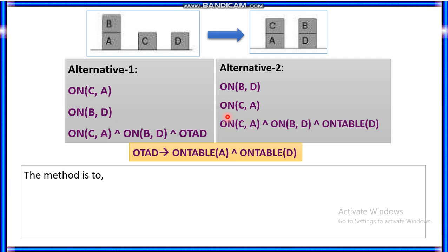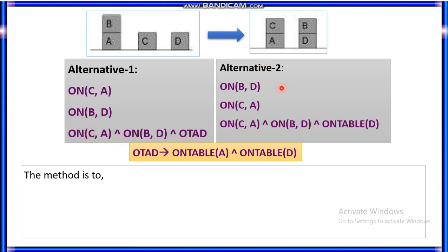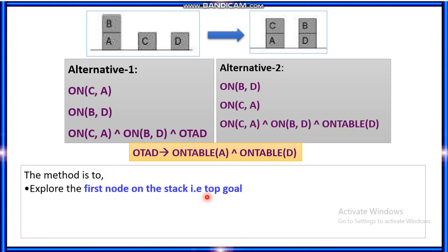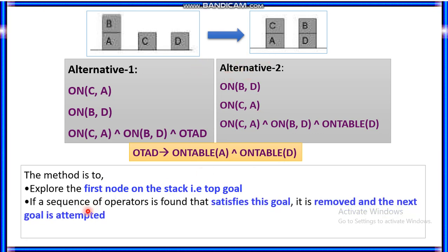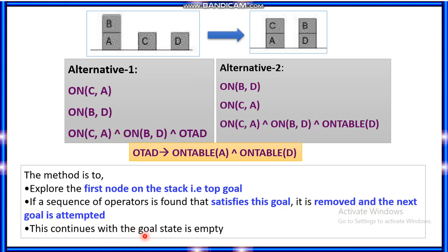There are two alternatives to achieve the goal state. Alternative one: solve on(C, A) and on(B, D) combined. Alternative two: first solve on(B, D), then on(C, A), to reach the final goal. OTAD means on-table(A) and on-table(D). The method is to explore the first node on the top of the stack; if a sequence of operators satisfies this goal, it will be removed and the next goal attempted. This continues until the goal stack is empty.